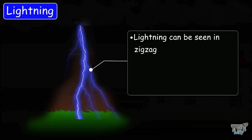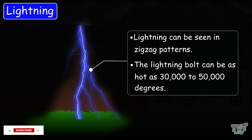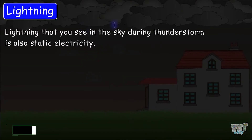Lightning can be seen as zig-zag patterns in the sky, which are very dangerous. The lightning bolt can be as hot as 30,000 to 50,000 degrees — even hotter than the surface of the sun. Now you know what static electricity is and the reason behind lightning that you see in the sky during a thunderstorm.